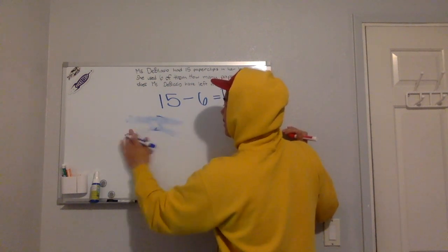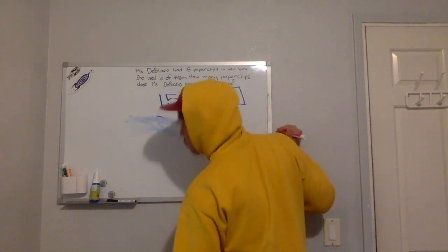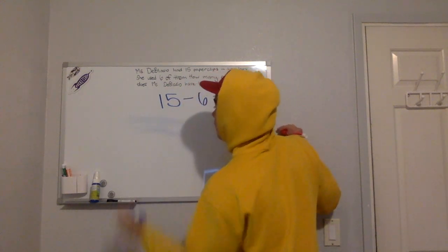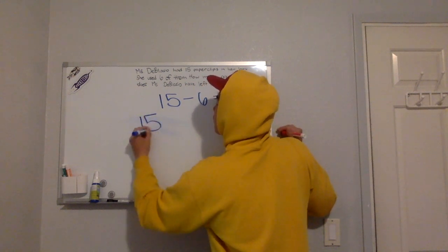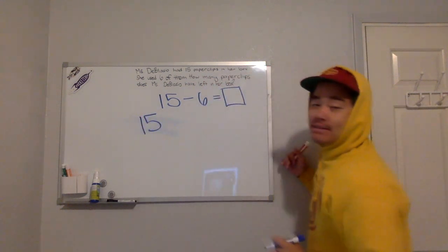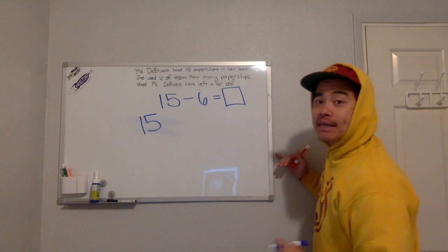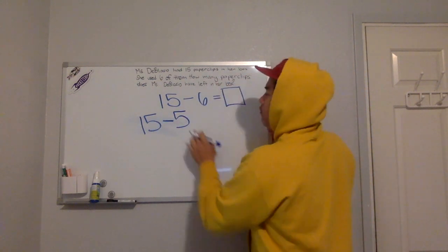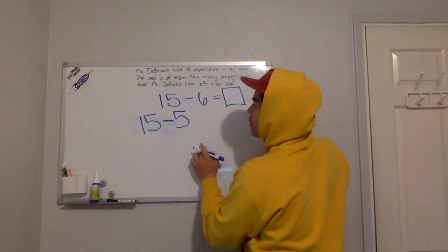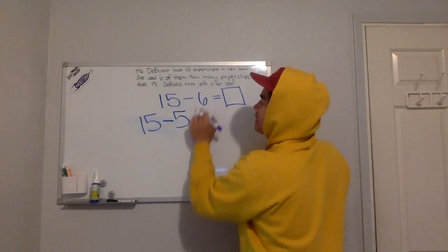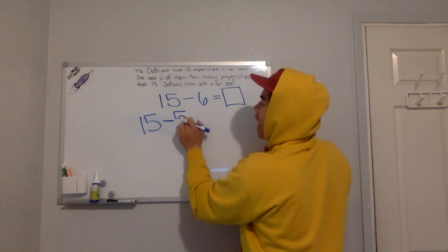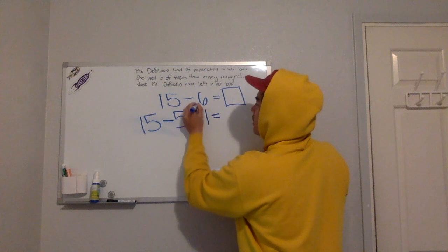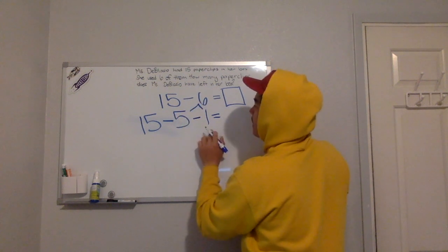So we want to make 10. So 15 minus what makes 10? 15 minus 5. So 15 minus 5 makes 10. And where did we get the 5 from? We got the 5 from the 6. So if I take away 5 from 6, I have 1 left.